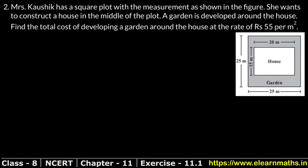A garden is developed around the house, so the remaining area is used to create a garden. We need to find the total cost of developing the garden around the house. If the cost of developing the garden is 55 rupees per square meter, what will it cost? Since there are no direct dimensions of the garden, we will subtract the house area from the plot area.